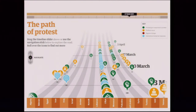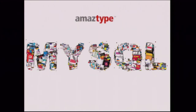The Path of Protest — this is an interactive data visualization where you move your mouse to the left and navigate through different days, and you can click on any of those spots and it will forward you to an article on the web about what happened on that day.